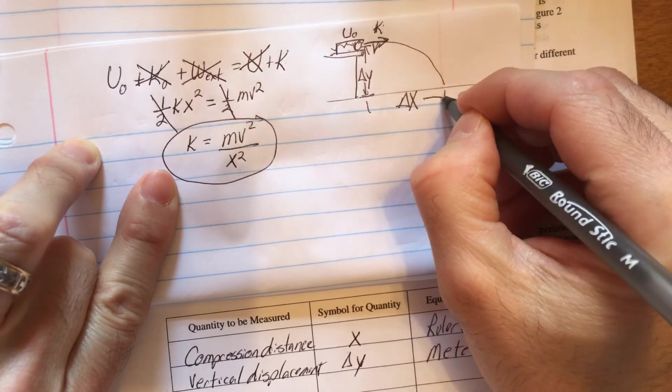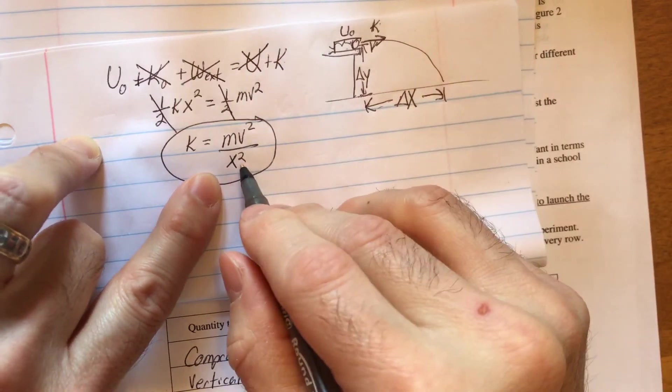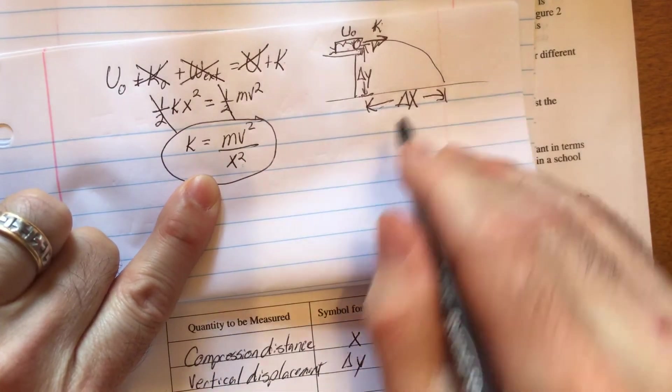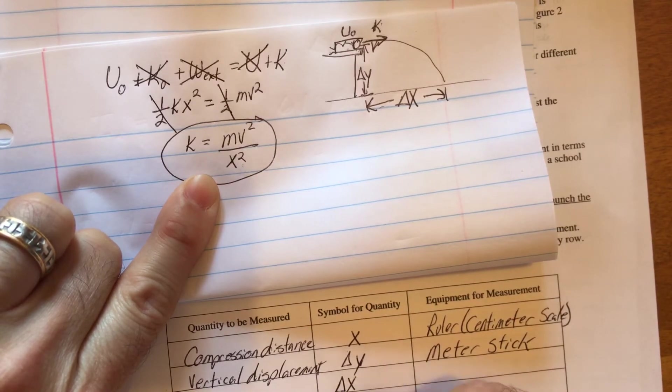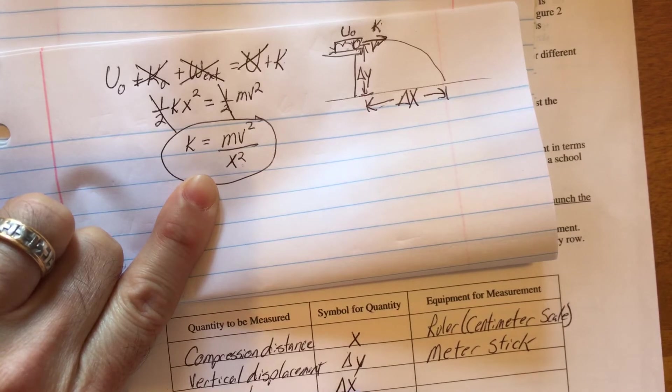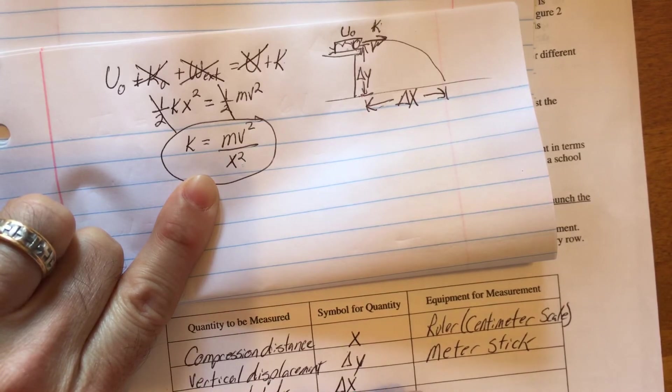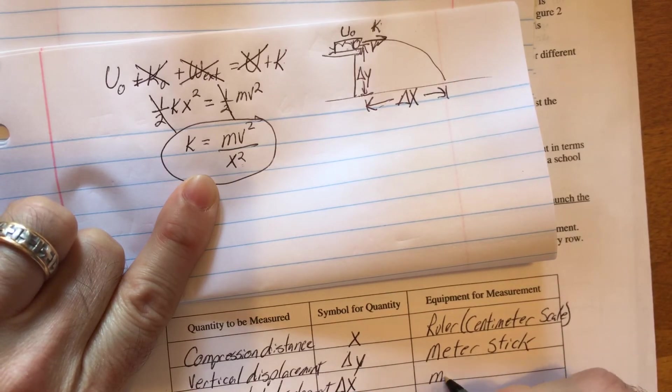The other thing I can do is measure this. I'm going to call this delta x. That's why I wanted to change this. I might have used d or something other than an x. Because I have x here and delta x here. I don't like that. So delta x is my horizontal displacement. And that's going to be also a meter stick.